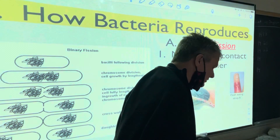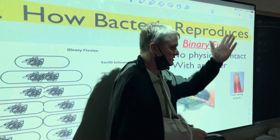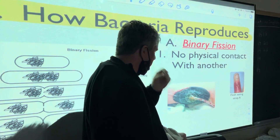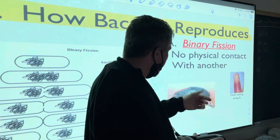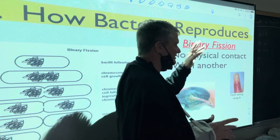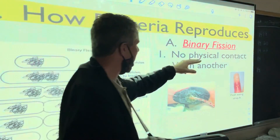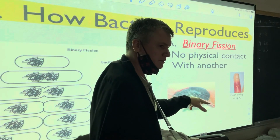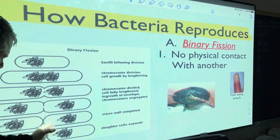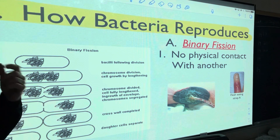Instead of just saying 'I don't know what that is,' break the word apart. 'Fission' means to split — right down the middle. Nuclear fission is when you split atoms, same idea. 'Binary' means two. So you're splitting into two. Bacteria start out as one and split into two — that's binary fission.